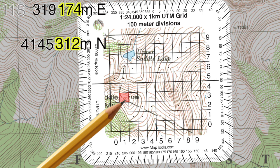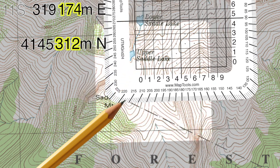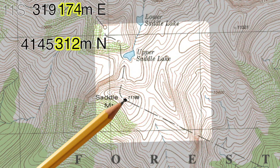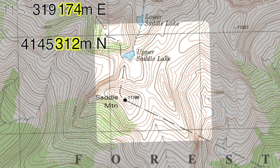To place a mark on the map, take a mental snapshot of the point's location with respect to the map markings, move the tool out of the way, and then make the mark in the correct position. In many situations, you do not need to mark the map — just visually confirming your location on the map is sufficient.